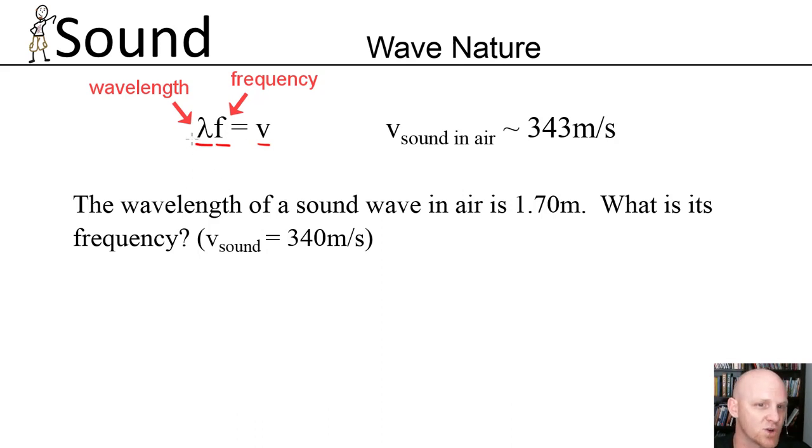So if we look here, there's three variables in this equation. Typically I've got to give you two, and I can ask you to solve for the third. That's what this first question here is doing. You're given the wavelength of 1.7 meters. You're given the speed of sound at 340 meters per second. And the question is, what is the frequency?